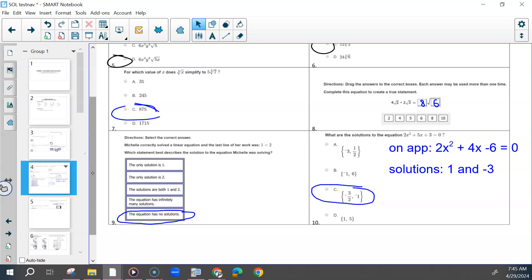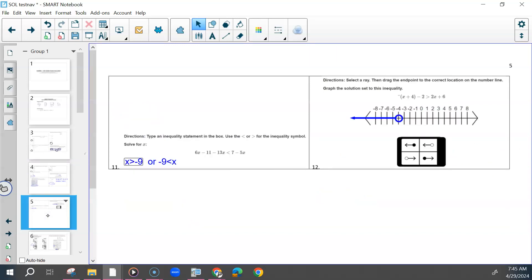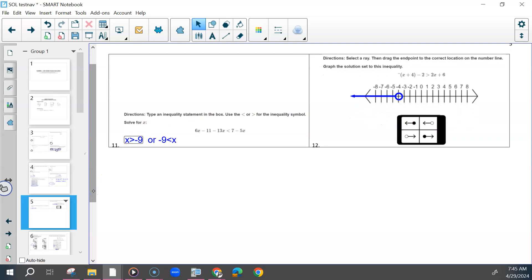And then we're on to 11. You could have had either of these. X is greater than negative 9 or negative 9 is less than X.